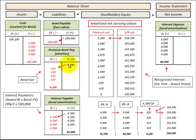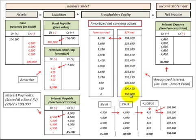In review, we've amortized this premium on bonds payable down to a zero balance, and by doing that we reduced the carrying value of the bond by the $410 premium amortization each period. We start out at $104,100 and by the time we get to the end of the last payment — when the bond becomes due — we have a $100,000 carrying value that matches its face value.